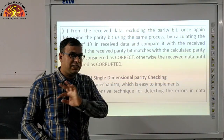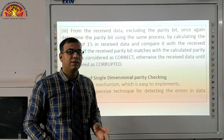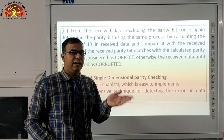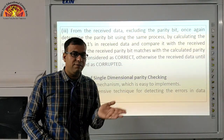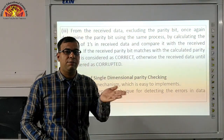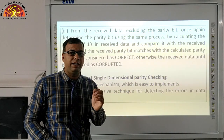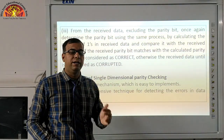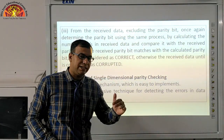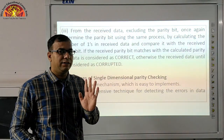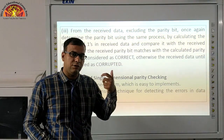Otherwise, the received data unit is considered corrupted. If two bits change, the parity changes by two bits. Once we get the first data, we get even, and we get odd — meaning the data was corrupt. The second data was odd and then we get even, so the number of ones changed.